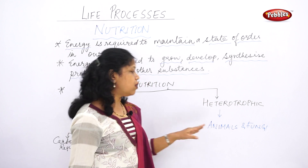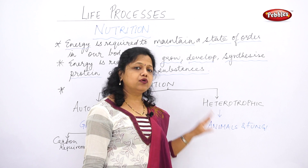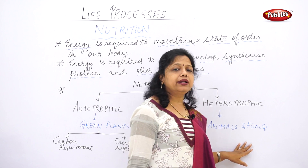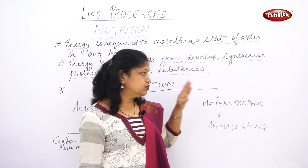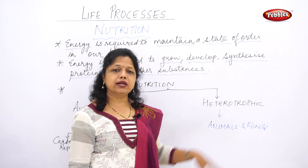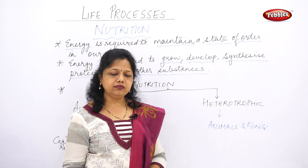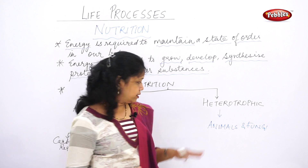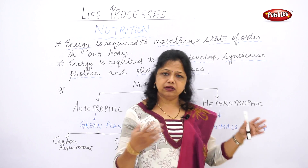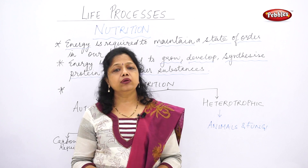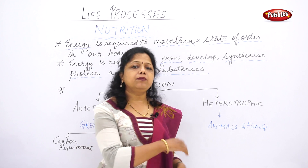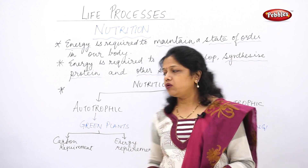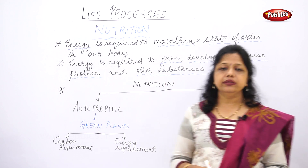Human beings depend on plants for their energy requirement or carbon requirement. Those animals are called heterotrophs, and that type of nutrition is called heterotrophic nutrition. Heterotrophic nutrition is shown by animals, human beings, and fungi, who depend directly or indirectly on plants for their nutrition.